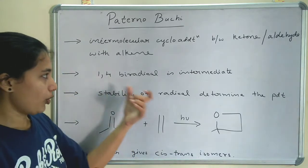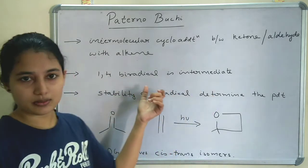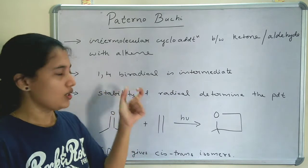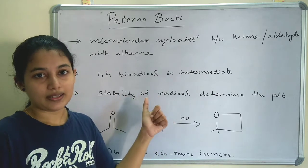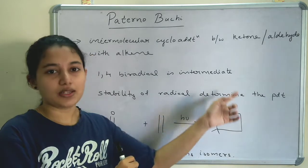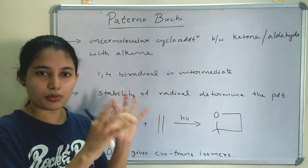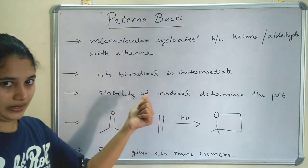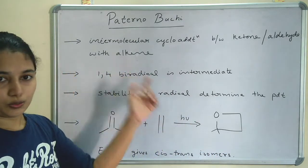An important point is that a 1,4-biradical is the intermediate. 1,4-biradical means a radical is present at the first and fourth positions. This 1,4-biradical determines the product — the stability of the radical determines the product. The stereochemistry of the product depends upon the stability of this 1,4-biradical intermediate.